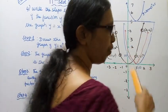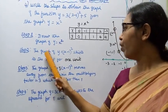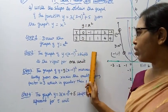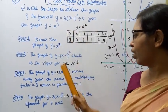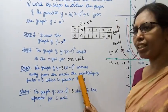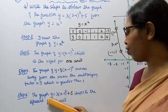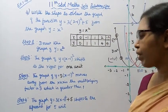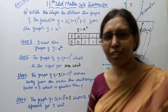Step 1: Draw the graph of y equal to x square. Step 2: The graph of y equal to (x-1)² shifts to the right for 1 unit. Step 3: y equal to 3(x-1)² moves away from the x-axis — the multiplying factor is 3, which is greater than 1, that is a stretch. Step 4: The graph of y equal to 3(x-1)² plus 5 shifts upward for 5 units.